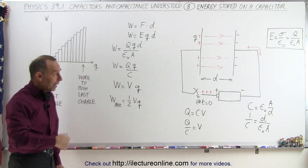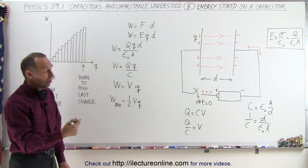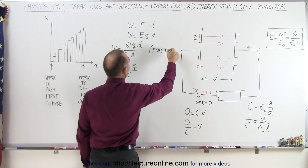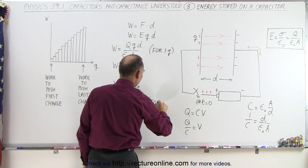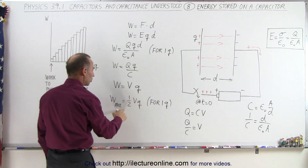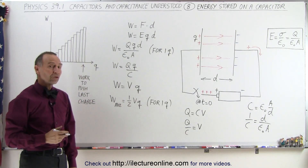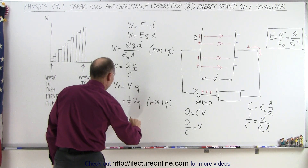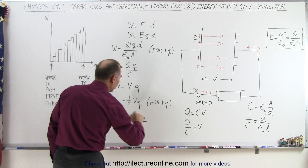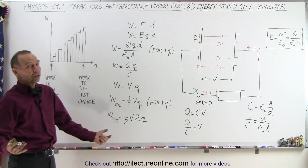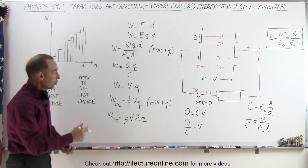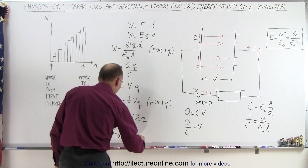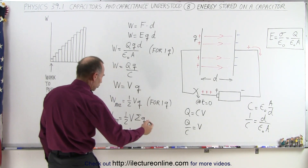And then if you add them all up — add up all the charges — the total work is one-half V times Q for one charge on average. That's the average work to put one charge onto the capacitor. The total work is going to be equal to one-half the voltage times the sum of all the charges you're going to place on there. All the charges you're going to place on there is going to be the total charge Q. So essentially the total work to put all the charge onto the capacitor is going to be one-half V times Q, or it's typically written as Q times V over 2.